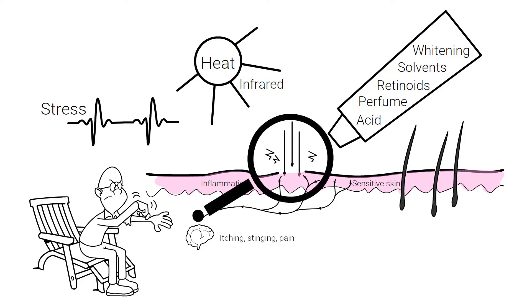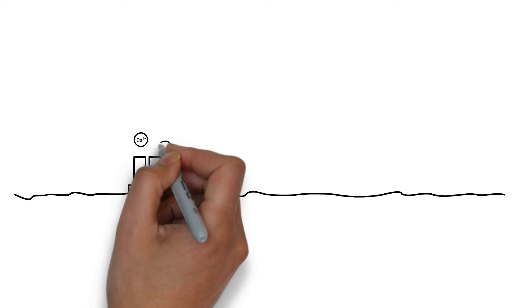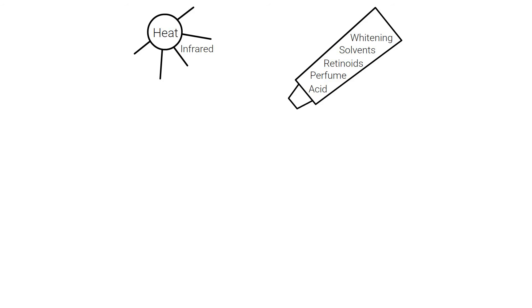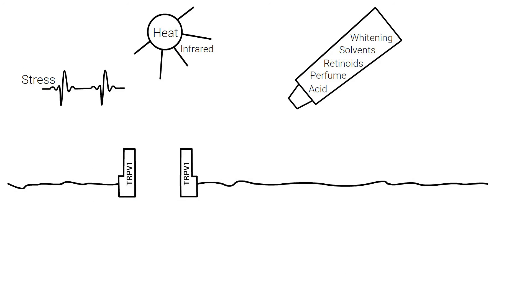Let's take a closer look at the mechanism. The nerve endings contain a calcium channel, the TRPV1 receptor. Under normal conditions, it is closed. Heat, ligand binding or stress will open the TRPV1 receptor channels.